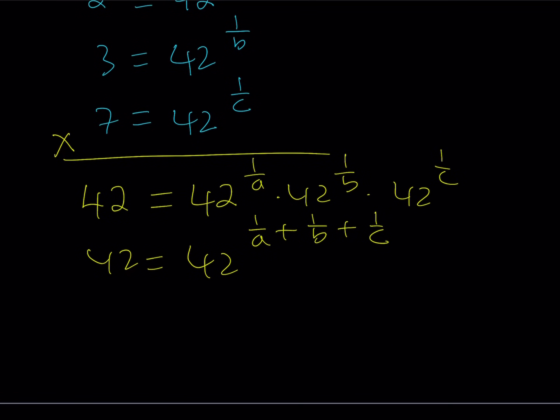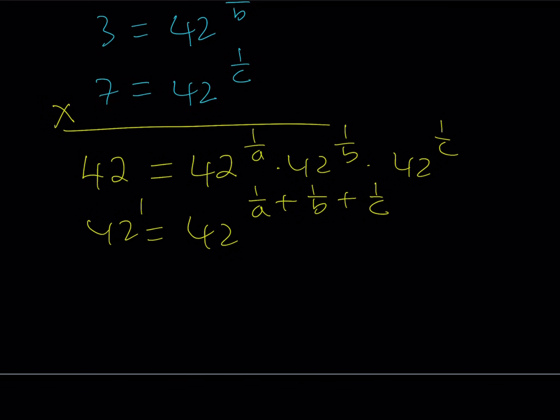Obviously, 42 can be written as 42 to the power 1. So from here, we can safely say that since the bases are equal, the exponents are also equal, which gives us 1 over A plus 1 over B plus 1 over C equals 1.